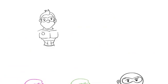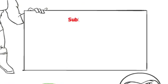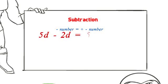Let us look at the subtraction of terms. We know that the subtraction of a term is the addition of negative numbers, such that 5d minus 2d equal 5d plus minus 2d. This is equal to 3d.